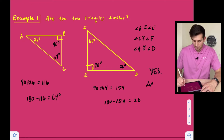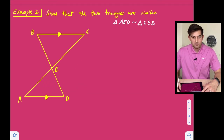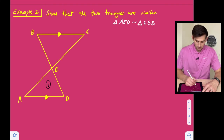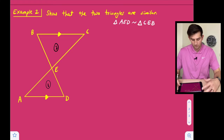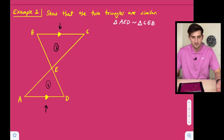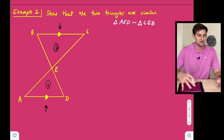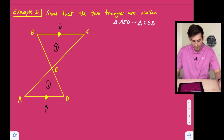We can write a similarity statement: triangle ABC is similar to triangle DEF. Now let's look at another one. It says show that the two triangles are similar — triangle AED and triangle CEB. We have parallel arrows showing that segment BC is parallel to segment AD. Since that's the case, we can use parallel lines cut by a transversal angle relationships from the previous video, and also another angle relationship in the middle.